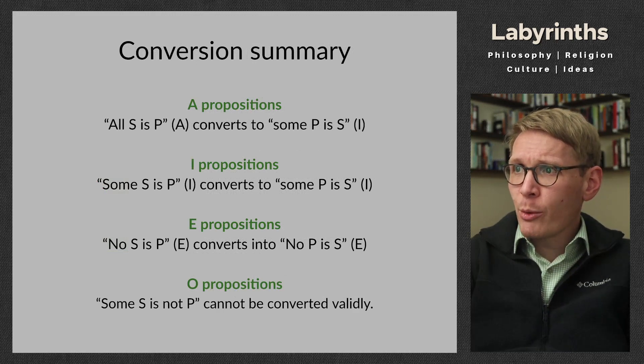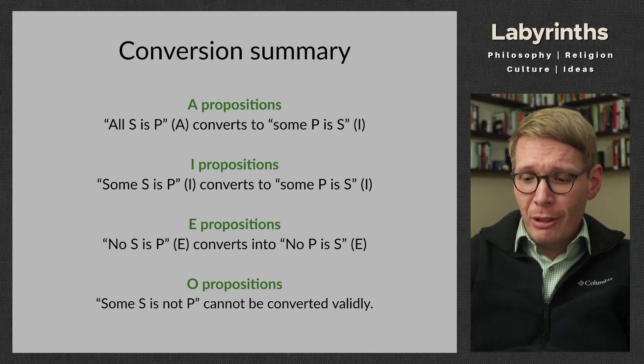So there are our four operations — A, I, E, O — with the rules on the slide. This is a useful skill, not so much because you'll be sitting around converting propositions in everyday life, but when you come across anything you read online, in news articles, or anywhere else, if you're able to figure out what actual claim is being made — the logical content of an argument or proposition — you're able to draw conclusions and implications using these operations. Next time, we'll be looking at our last kind of immediate inference, which is obversion.